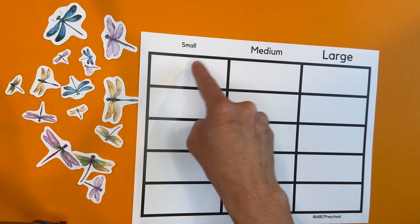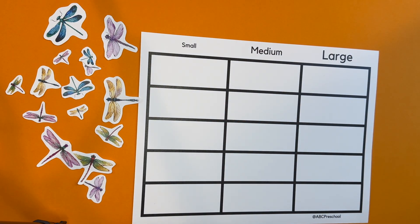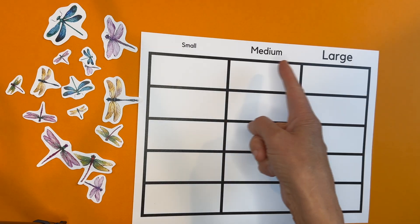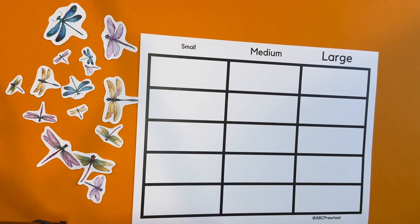Whenever I think of small, medium, large, and families, I think of the story of the three bears, right? The mama bear, the papa bear, and the baby bear. But we're not doing bears. We're doing dragonflies.